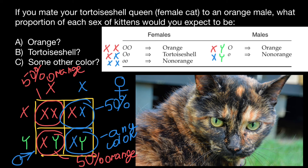Some of you may ask how I got 200%. Pay attention to the question: 'What proportion of each sex of kittens would you expect?' Again, 50% of the litter will be females and 50% will be males. If we consider females, half are orange and half are tortoiseshell. Half of the male progeny are orange and half are any other color. If the question were about the whole litter, the answer would be 25%, 25%, 25%, and 25%. But since sex is specified, we give the answer in regard to each sex.